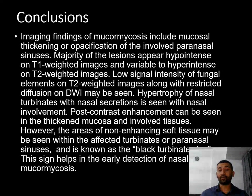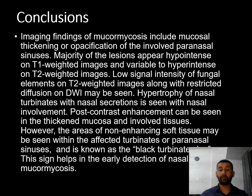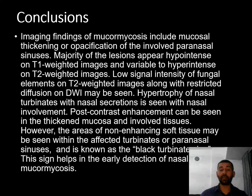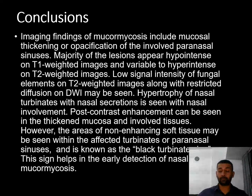Conclusion: Imaging findings of mucormycosis include mucosal thickening or opacification of the involved paranasal sinuses. The majority of lesions appear hypointense on T1 and variable to hyperintense on T2 images. Low signal intensity of the fungal elements on T2-weighted images along with restricted diffusion on DWI may be seen. Hypertrophy of the nasal turbinates with nasal secretion is seen with nasal involvement. Contrast enhancement can be seen in the thickened mucosa and in bald tissue. However, areas of non-enhancing soft tissue may be seen within the affected turbinates or paranasal sinuses, also known as the black turbinate sign. This sign helps in the early detection of nasal mucormycosis. Thank you.